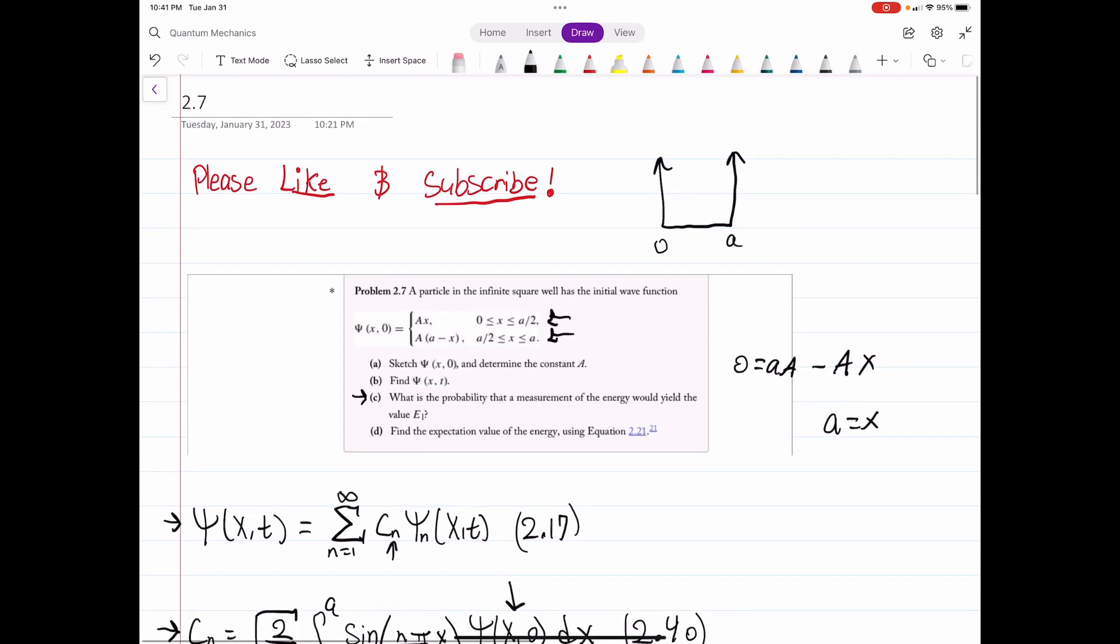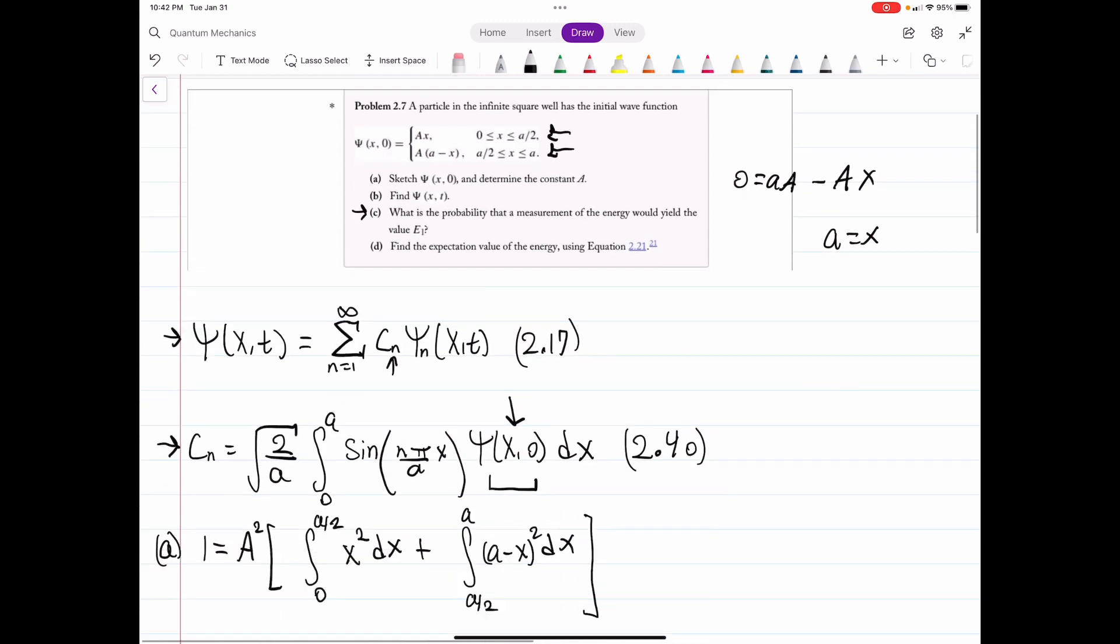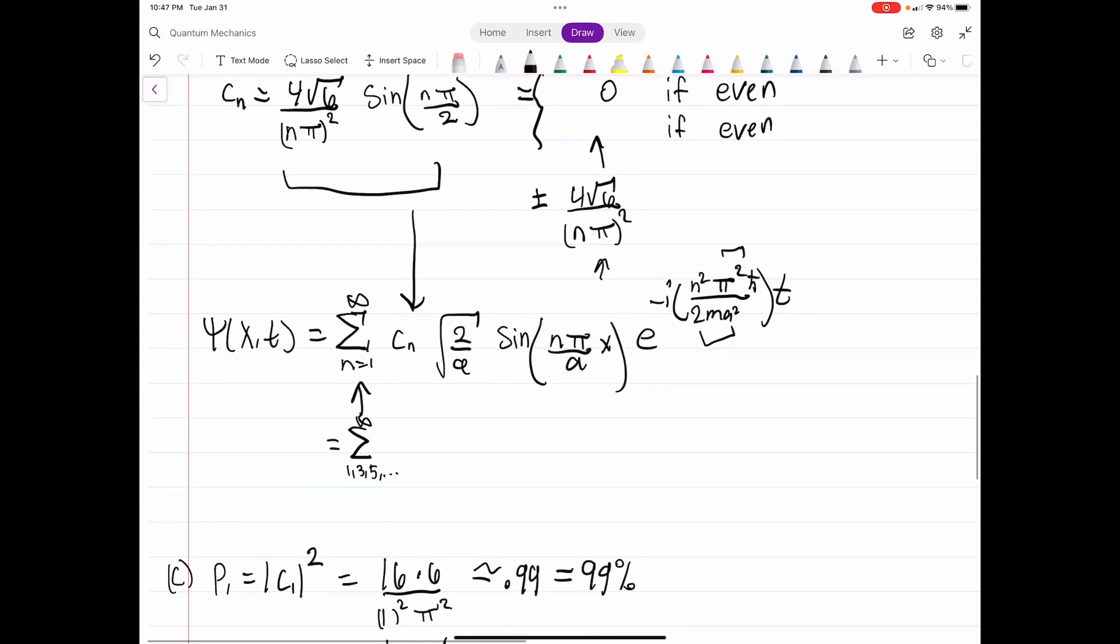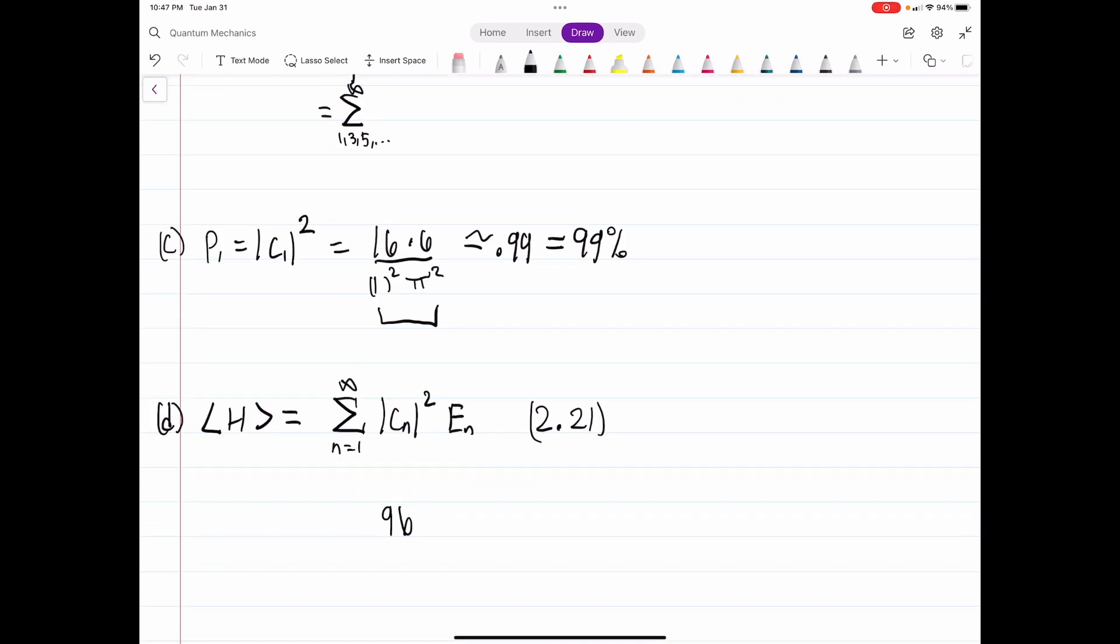And now for part D, we need to find the expectation value of energy using equation 2.21. I'm glad I have with me here. So the expectation value, I lost the equation for a moment, but here it is. So this is equation 2.21. Just found it here handy. And we already know what C sub n is. So that's going to be 96, so that's going to be that, n to the n squared, so n to the 4th, pi to the 4th as well, times the energy for this, which is going to be n squared, pi squared, n squared, h bar squared, over 2m a squared. And then the summation, of course.